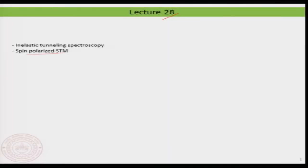Then we will move on to something called spin polarized scanning tunneling microscopy. With that kind of technique, we can actually resolve magnetic properties of surfaces, and particularly if you are interested in looking at islands or materials that are magnetic in nature, you can basically detect the magnetic density of states. With that, I would try to conclude the tunneling microscopy part.